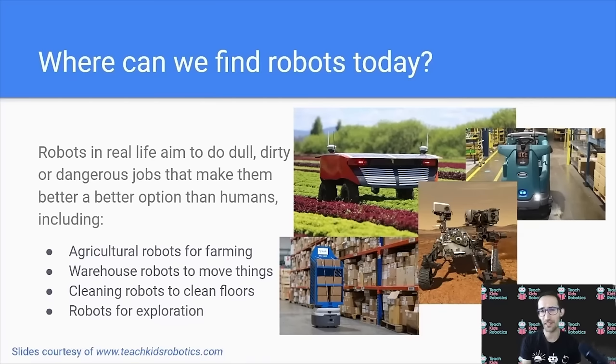Finally, where can we find robots today in the real world? Robots in real life aim to do dull, dirty, or dangerous jobs that make them a better option than humans, including agricultural robots for farming, warehouse robots to move things around, cleaning robots to clean floors, or robots for exploration in environments that would be too harsh for humans, such as the Mars rover from NASA.